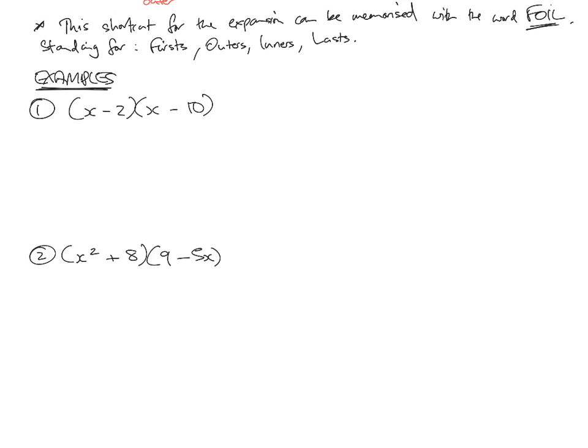So (x - 2)(x - 10). Let's remember FOIL: firsts are x times x, outers are x times -10, add inners, it's -2 times x, and last, plus -2 times -10. We're going to put these multiplications in brackets.